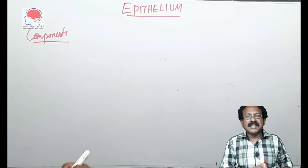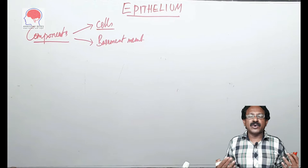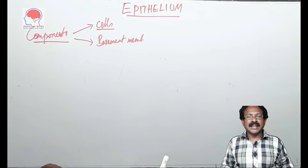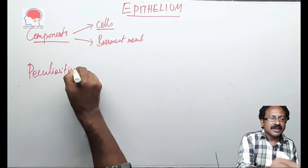All the epithelium has basically two components: cells and basement membrane. Cells are of different types based on the function and the location of the cell or the role of the epithelium that it is dealing with. Basement membrane is an amorphous layer on which the epithelium is resting.